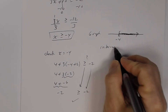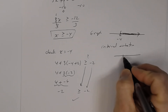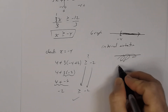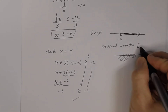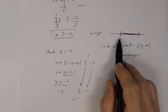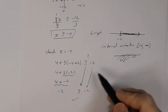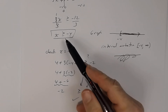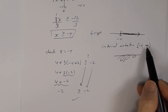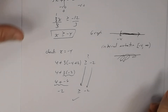The interval notation is: bracket, negative 4, comma, infinity, parenthesis — that's [-4, ∞). Use a bracket on negative 4 because it is a solution due to the equal sign, and always use a parenthesis with infinity and negative infinity.